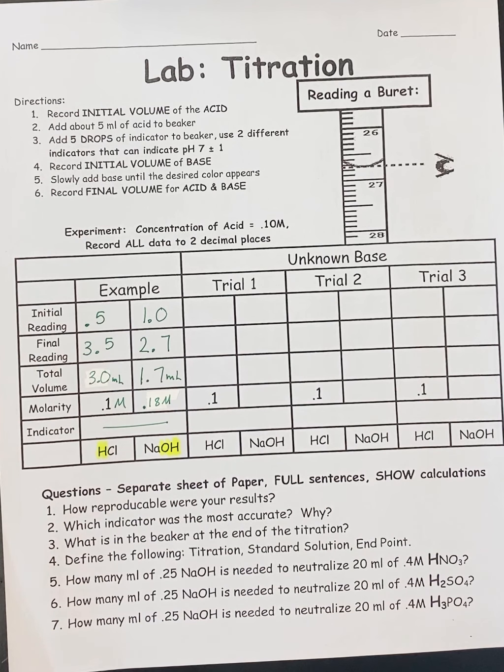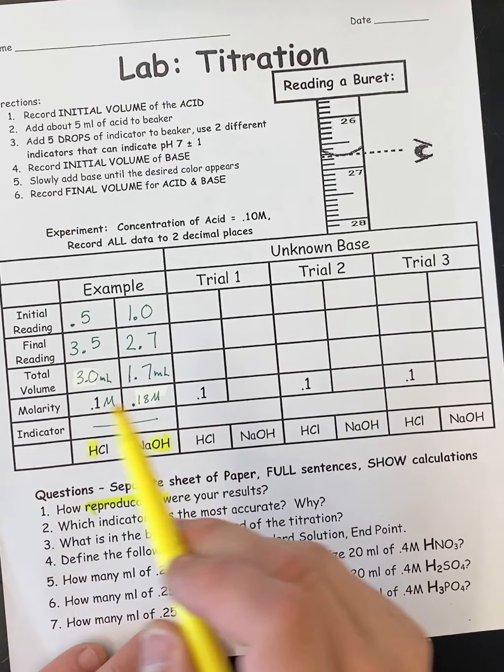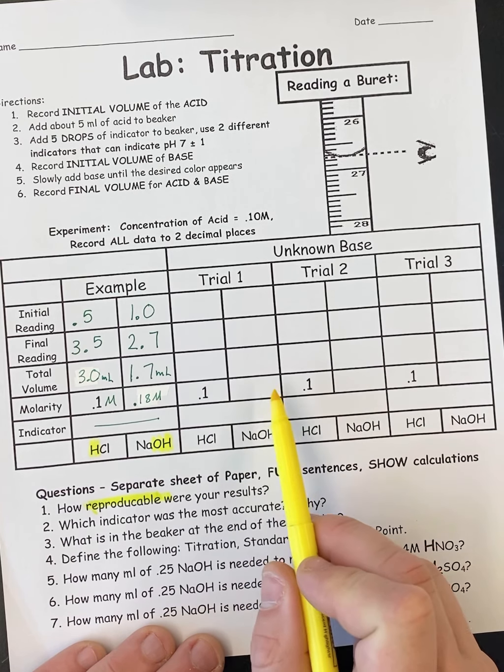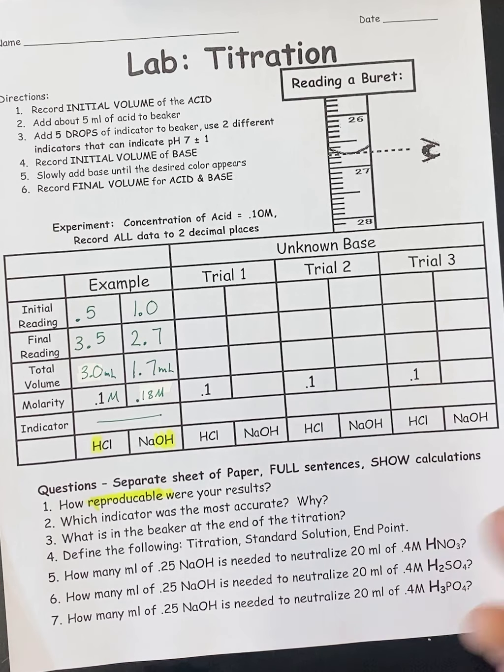Now, next question. So the question's on the bottom. How reproducible were your results? Meaning trial one, trial two, trial three. Ignore the example because I just made those numbers up. Were you getting similar concentrations for your base? If you were, then they were reproducible. That means if you did it a fourth time, you would be confident to say, I'm going to get an answer that's very similar to the first three trials. If all three trials are all over the place and there's no consistency to them, then you would say they're not reproducible because every time I do it, I get a different or a wildly different answer. If you get something that's really close together, that's reproducible.